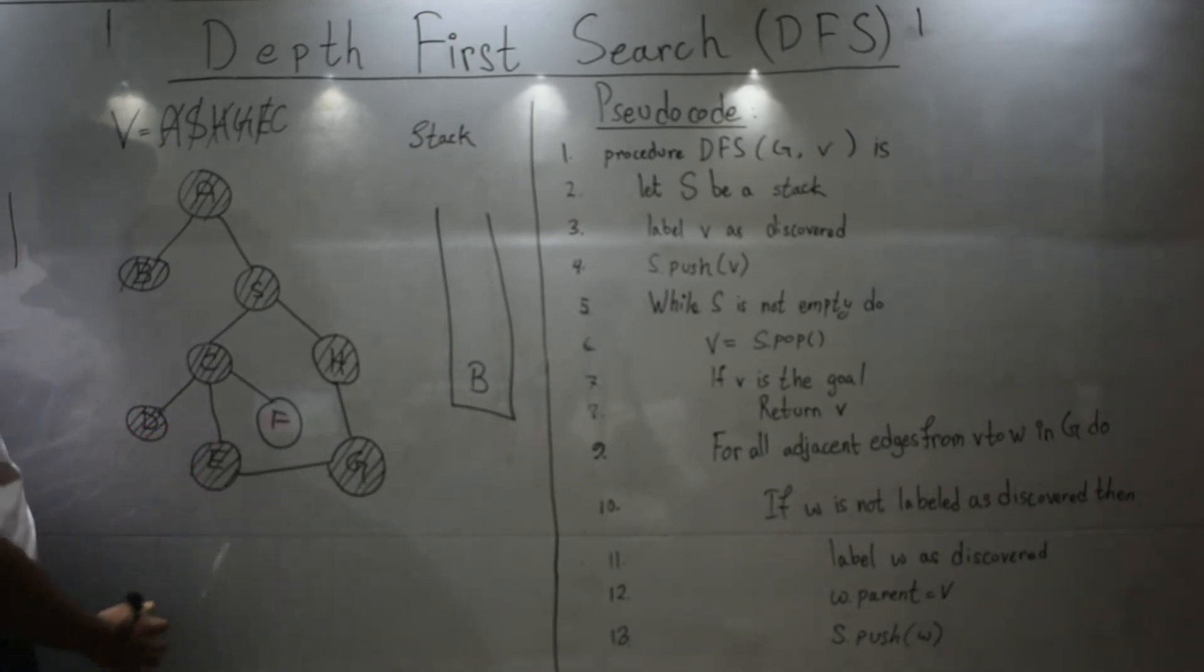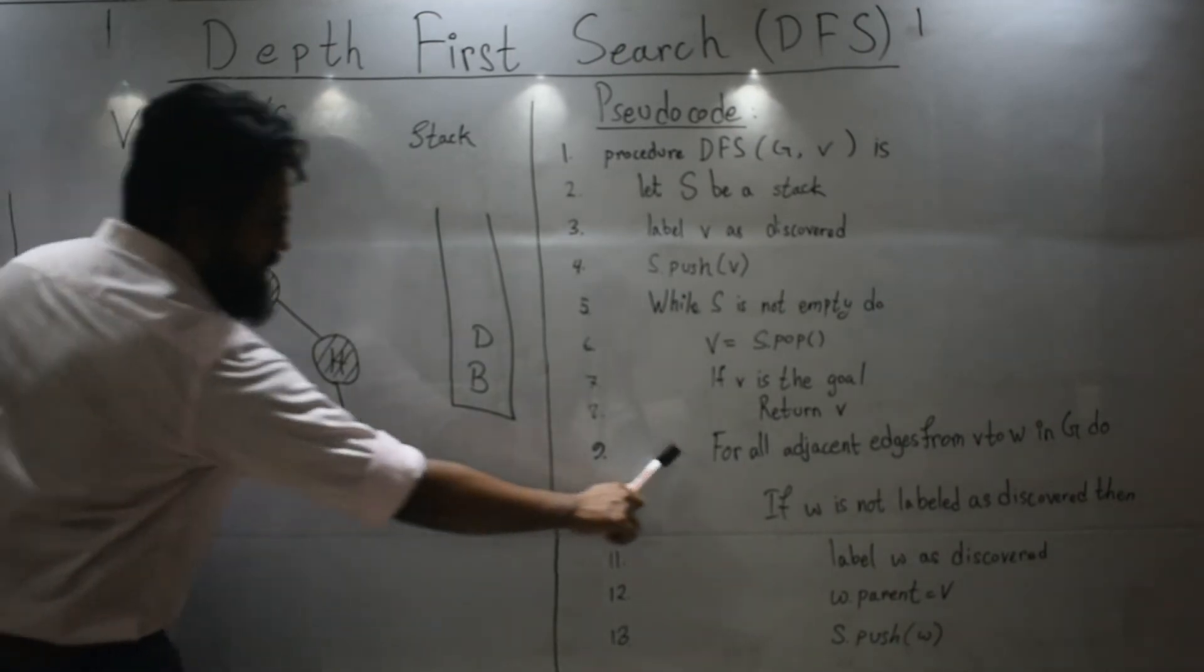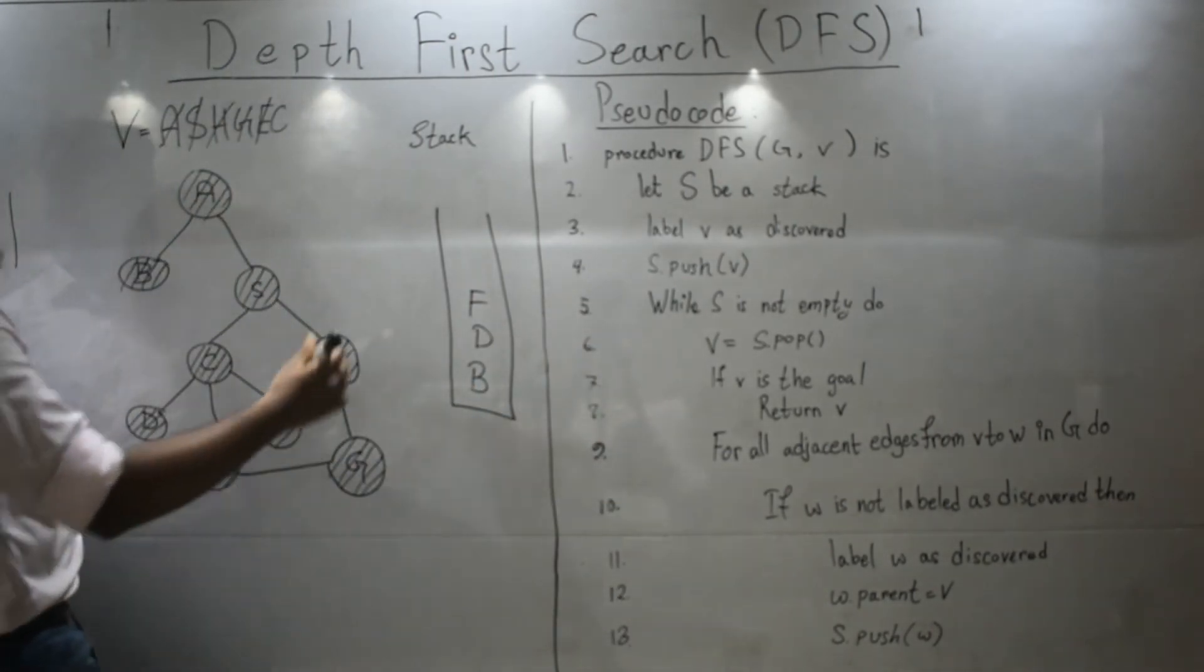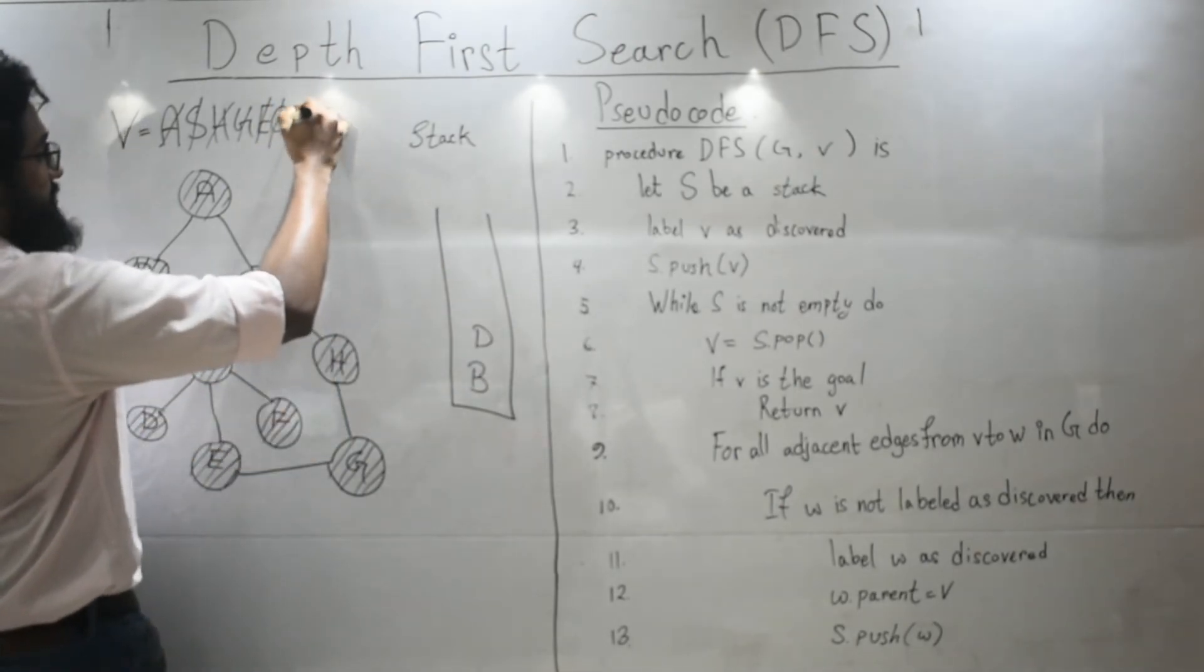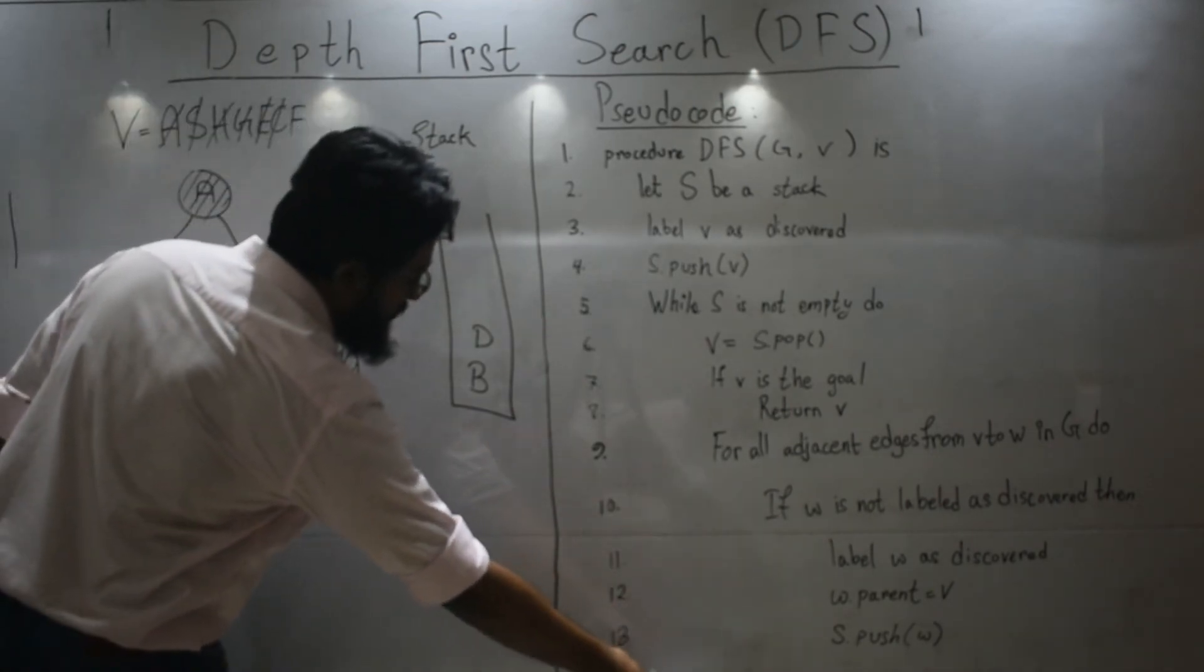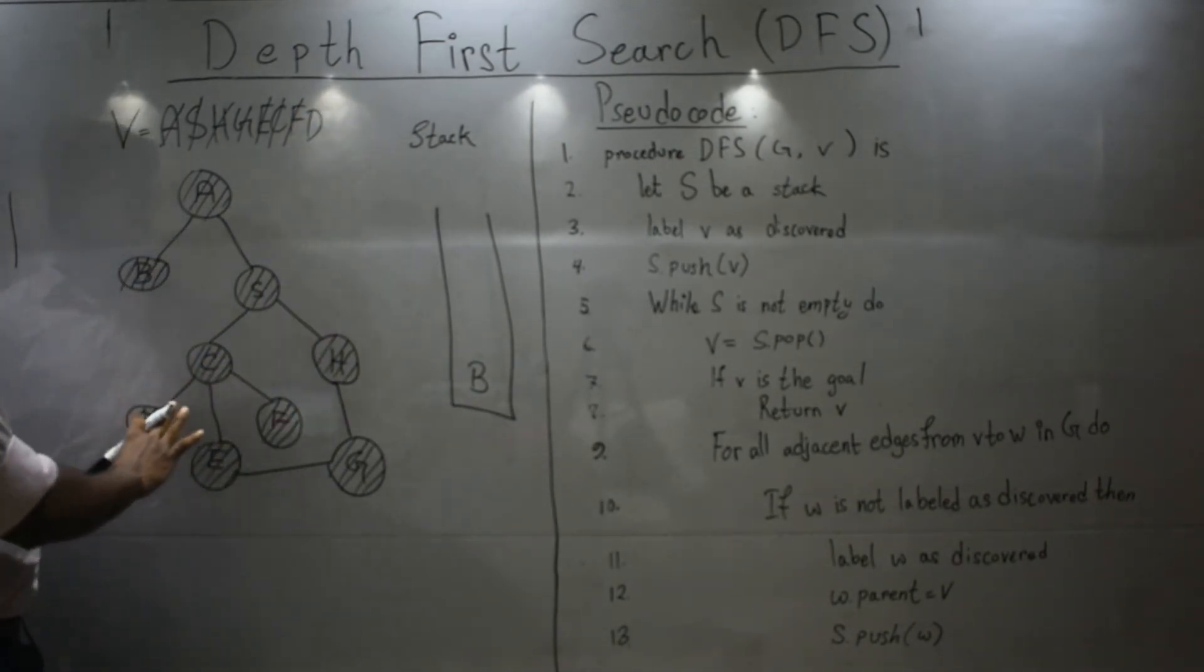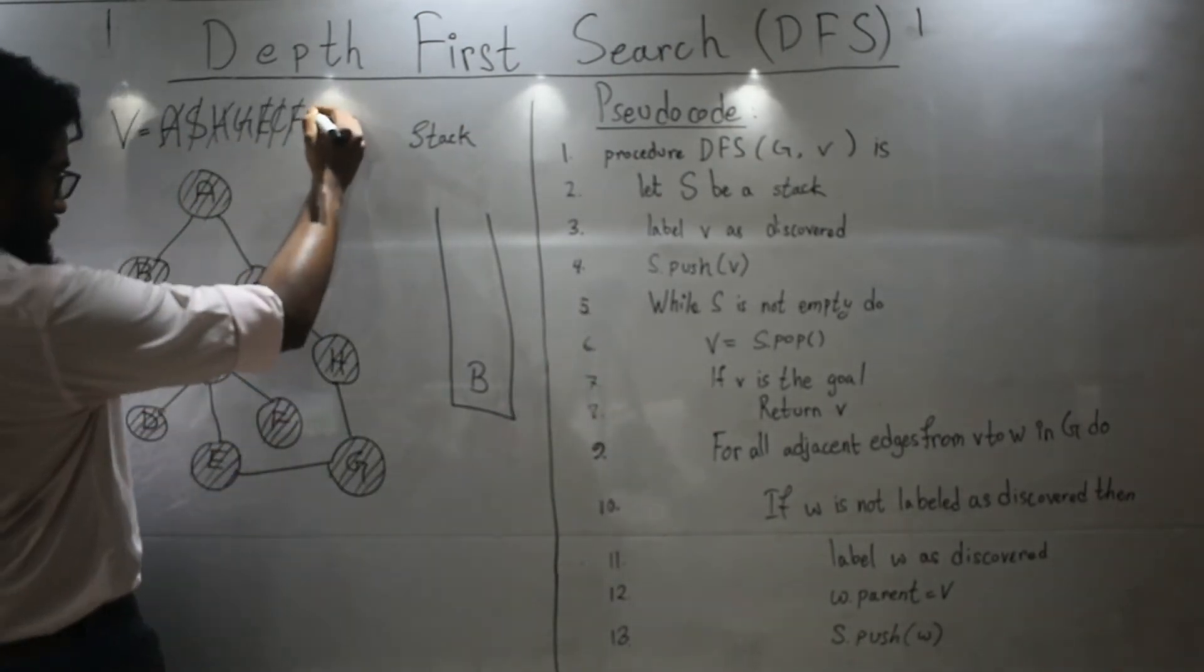Now again come back to line number six. Let's pop whatever is on top of my stack. So F is on top. Let's pop. F has no neighbors which are not visited. So again it will not follow this. It will straight come to line number six again. Pop. So D will be popped. D. No other neighbors of D are not visited. All of them have been visited. So again you will come back to line number six and pop. So let's pop B.